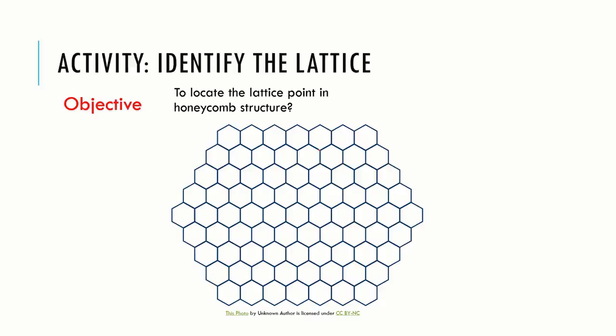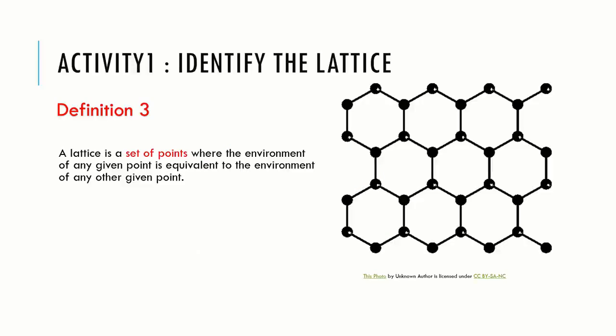To have more clear idea about the lattice, let us locate the lattice point in the honeycomb. The honeycomb structure is not a lattice because all the intersection points are not equivalent according to the definition of lattice. Point b and r are unequivalent here. Thus, it is not a lattice at all since all points do not have the same environment.